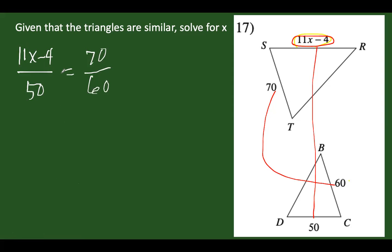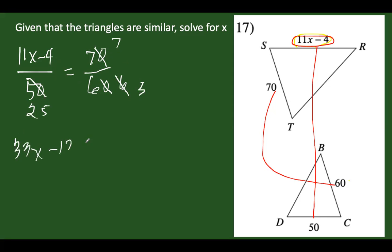We can simplify this — 70 over 60 becomes 7 over 6. And we can simplify 50 and 6 by 2, giving us 3 and 25. There are no other factors to cancel, so we do cross multiplication: 33x minus 12 is equal to 25 times 7.